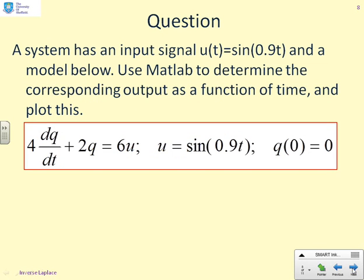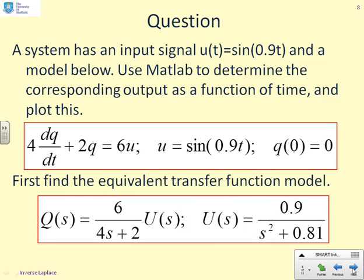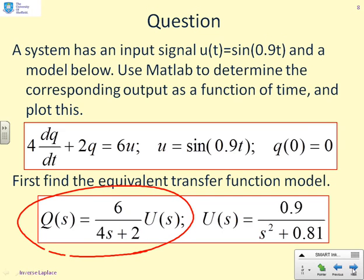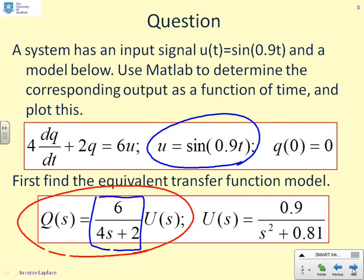Here's a practice question: a system has input signal u(t) = sin(0.9t) and the ODE 4·dq/dt + 2q = 6u, with q(0) = 0. Use MATLAB to determine the corresponding output as a function of time and plot it. The first step is to express this in Laplace transforms, giving Q(s) = (6/(4s+2))·U(s). The transfer function is G = 6/(4s+2) and the input is u(t) = sin(0.9t). These two parts in the Laplace domain are what we'll use in MATLAB.